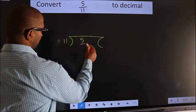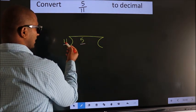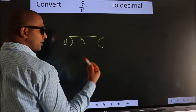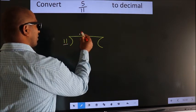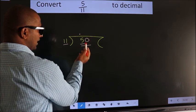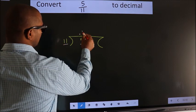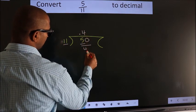Here we have 5, here 11. 5 is smaller than 11, so what we do is we put dot, take 0. So 50. A number close to 50 in 11 table is 11 fours, 44.